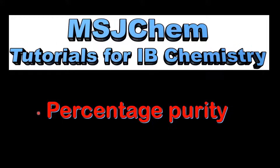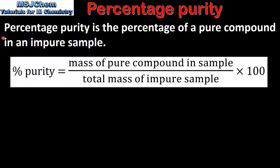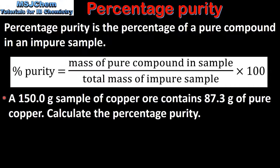This is MSJChem. In this video I will be looking at calculating percentage purity. Percentage purity is the percentage of a pure compound in an impure sample. Here we have the equation for calculating percentage purity: it is the mass of the pure compound in the sample divided by the total mass of the impure sample, multiplied by 100.